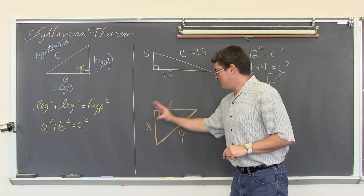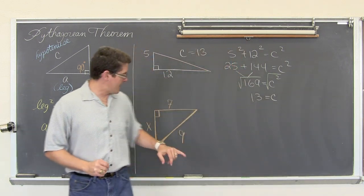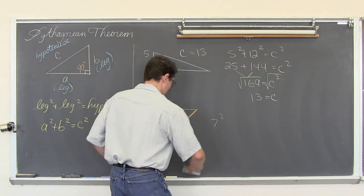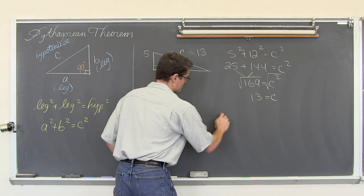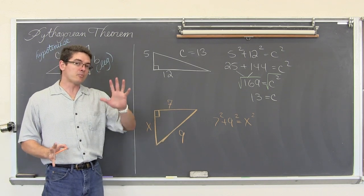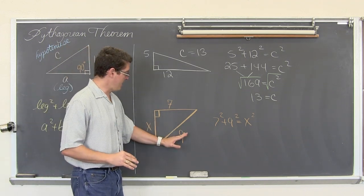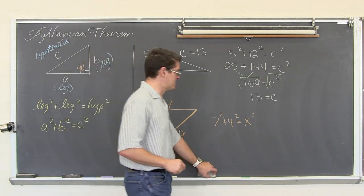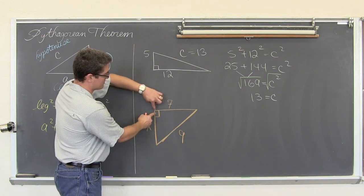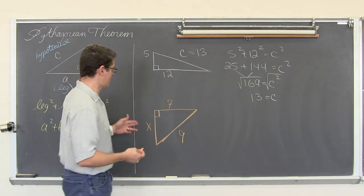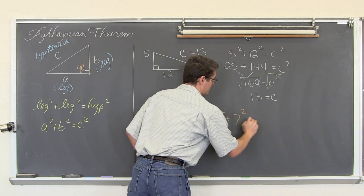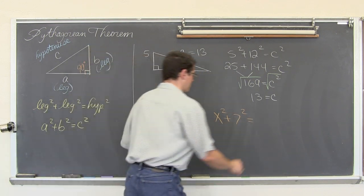Here we have another problem where the variable is on one of the legs. A lot of students incorrectly write 7 squared plus 9 squared equals x squared — they want to keep the variable alone for all problems. No. The hypotenuse, the side opposite the 90 degree angle, has to be the side that is left alone. The two sides that help make the right angle must stay together on the same side of the equation. So we have x squared plus 7 squared equals the hypotenuse squared, which is 9 squared.